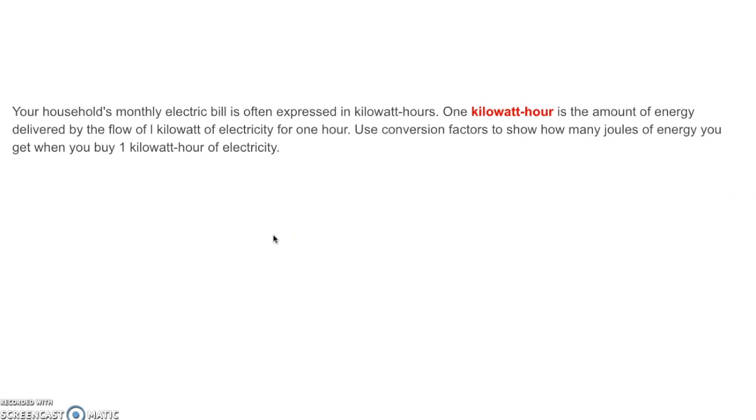And then lastly, your household's monthly electric bill is expressed in kilowatt hours. So when you get your electric bill someday, you'll see that one kilowatt hour is the amount of energy delivered by the flow of one kilowatt of electricity for one hour. So we're going to use conversion factors to show how many joules of energy you get when you buy one kilowatt hour of electricity. Do it now.